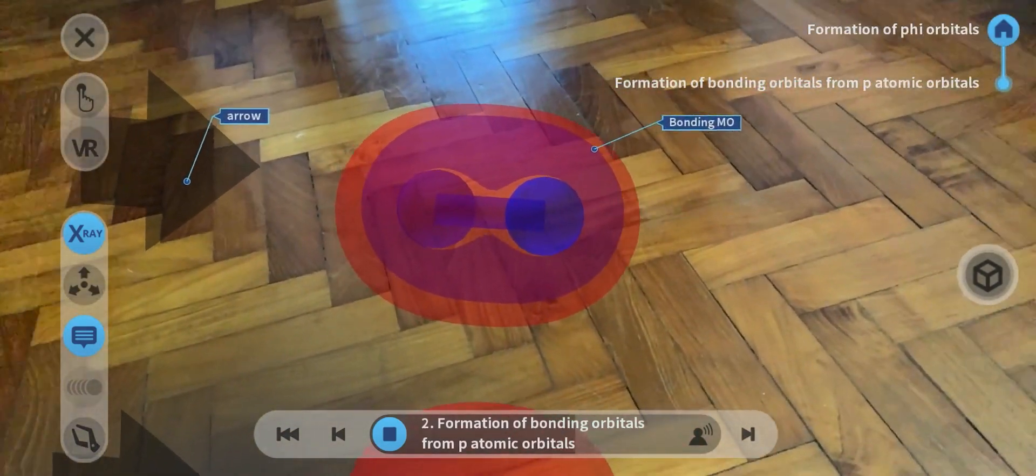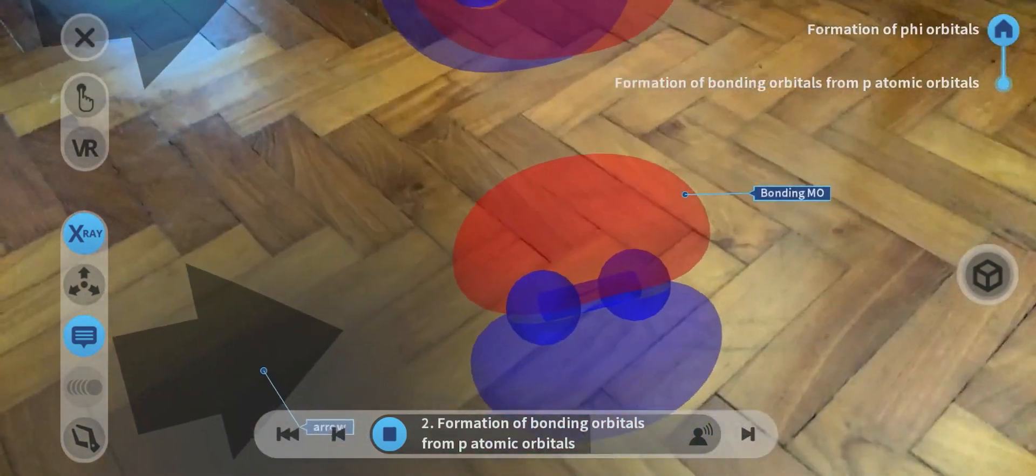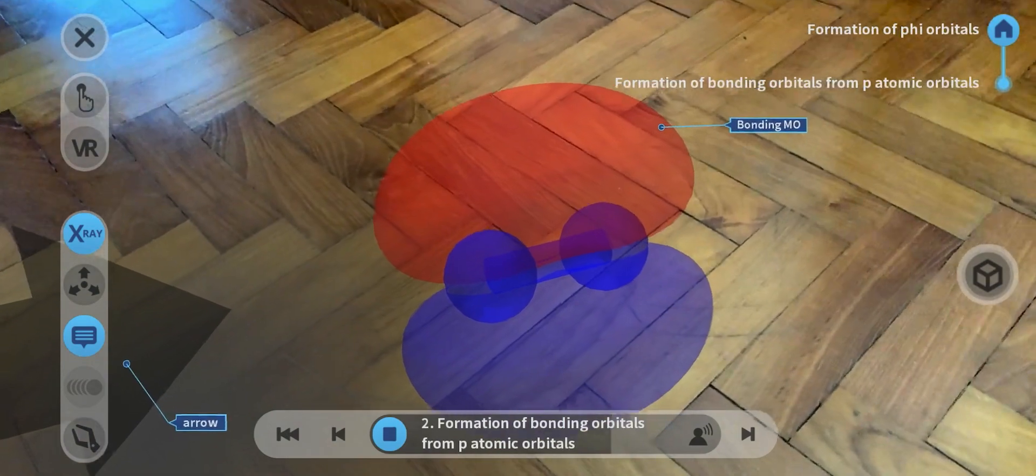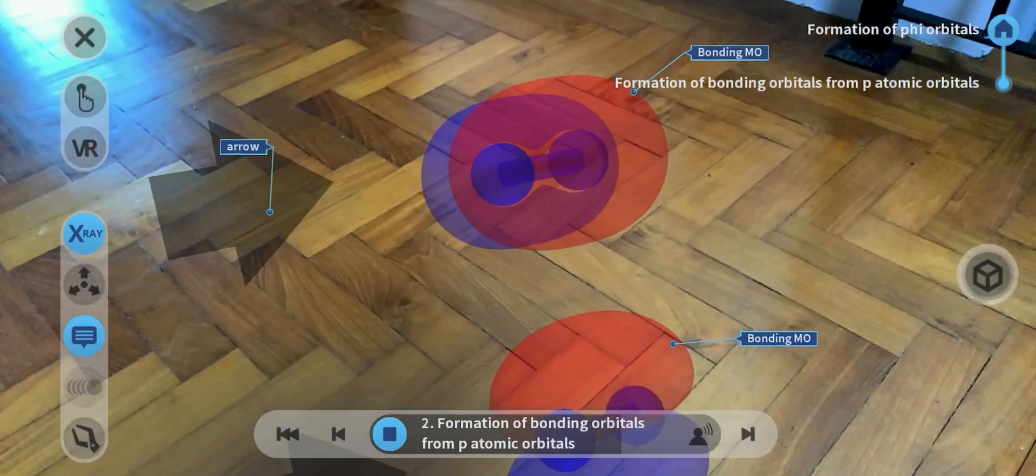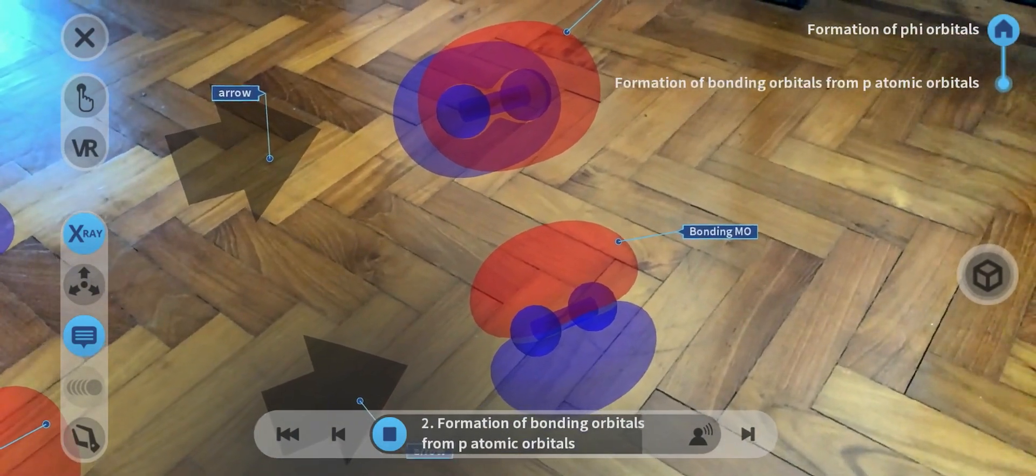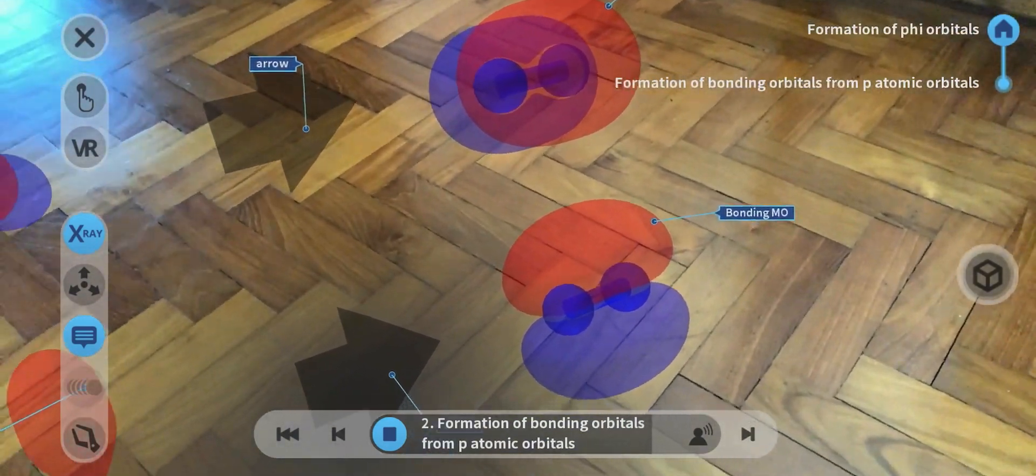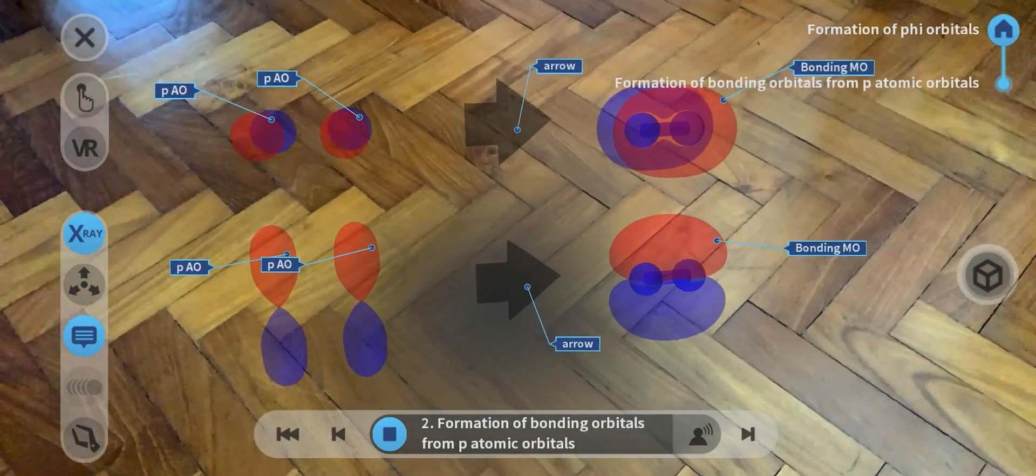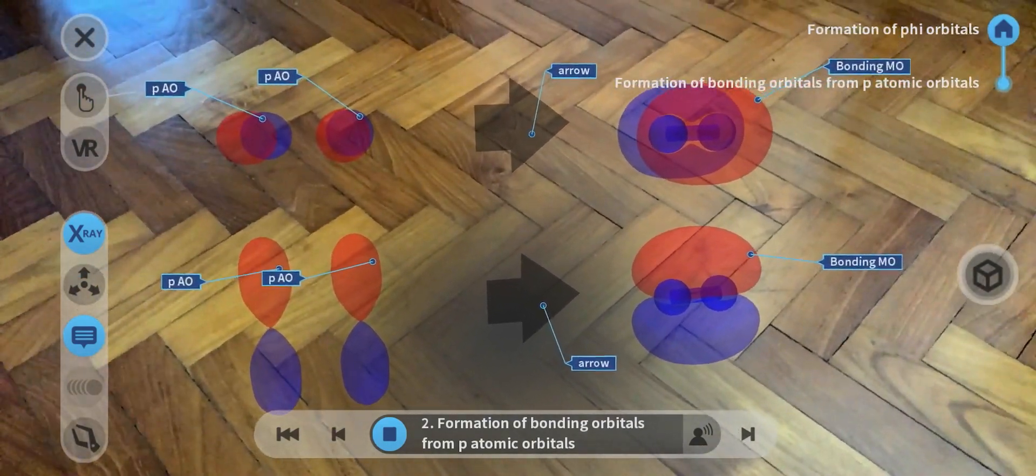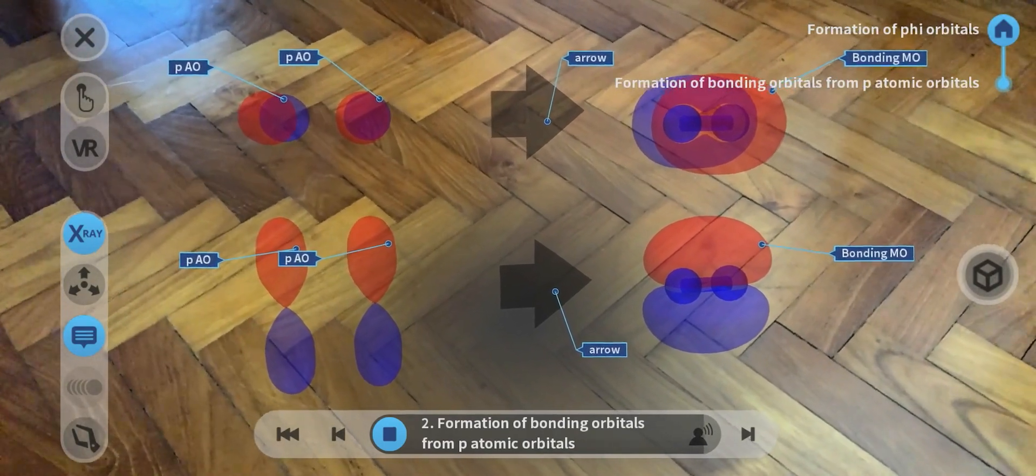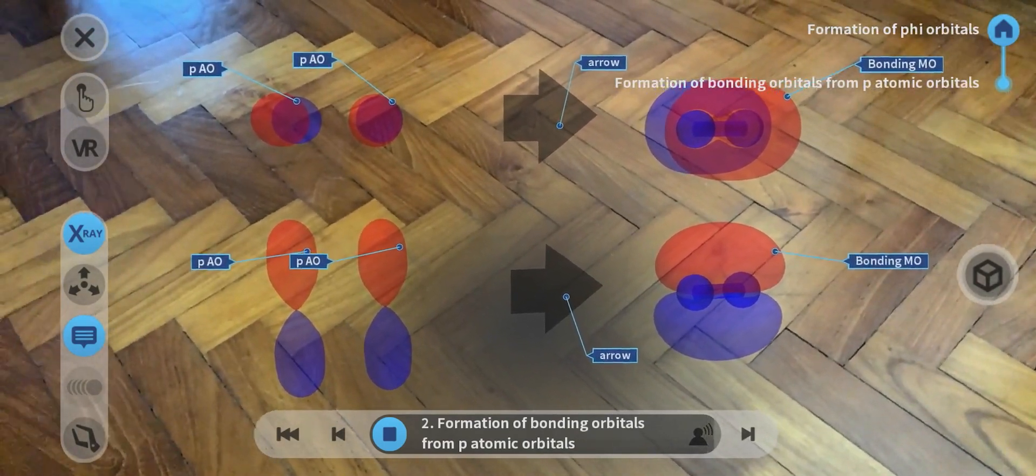Now you can see there is electron density between the two atoms. That blue cloud between the atoms shows electron density that keeps the two atoms together. That's why it's a bonding orbital and it contributes to the bond order of your molecule, making the bond stronger because of that electron density between the atoms.